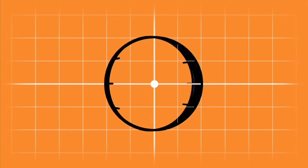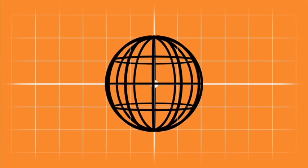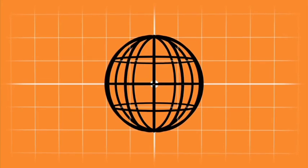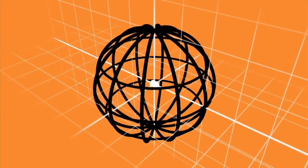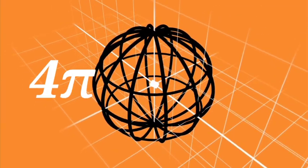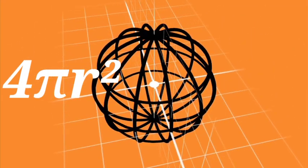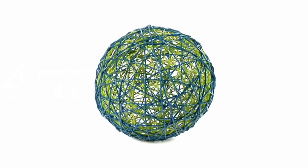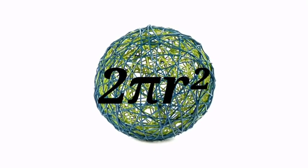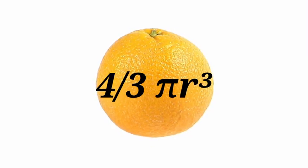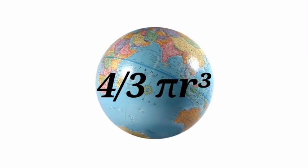This time it is a sphere. A sphere is a round solid three-dimensional figure with every point on its surface equidistant from its centre. The surface area of a sphere is 4πr². The curved surface area of a sphere is 2πr². The volume of a sphere is 4/3 πr³.